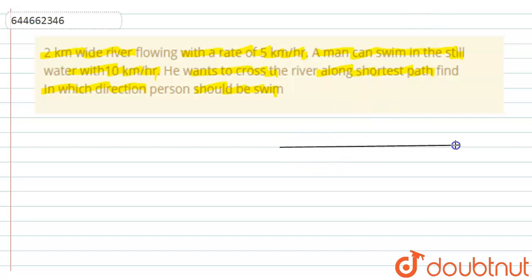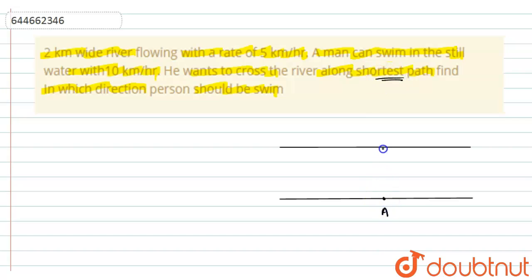This is the river. The person wants to cross the river along the shortest path, meaning if he is starting from point A, the shortest path would be to the exactly opposite point B. This path AB will be the shortest path to cross the river. The velocity of the man must be in this direction since he wants to swim across the shortest path.